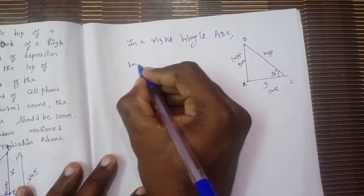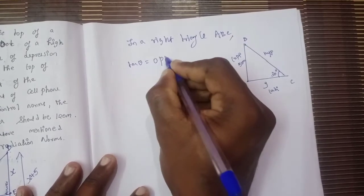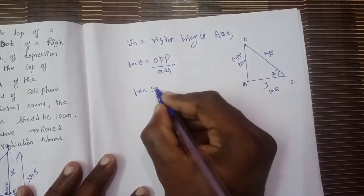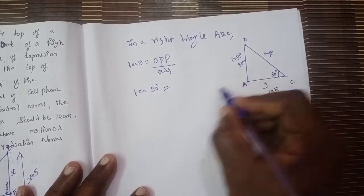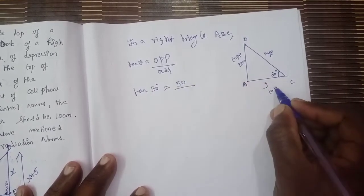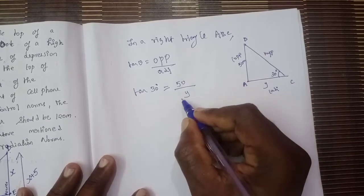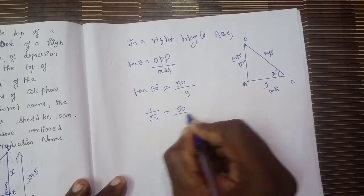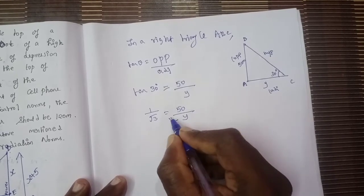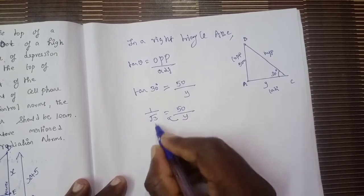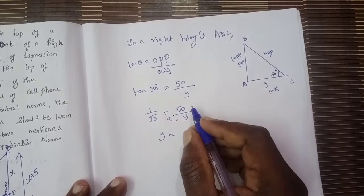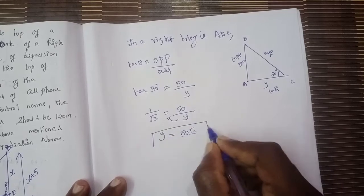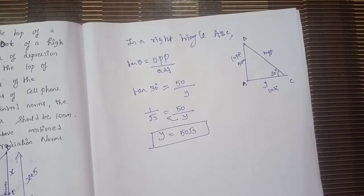Tan theta equals opposite by adjacent. So tan 30° equals 50 by y. The tan 30° value is 1 by root 3, which equals 50 by y. Taking the reciprocal, y equals 50 root 3.